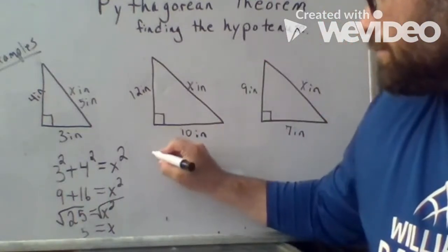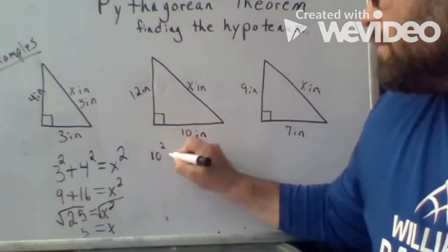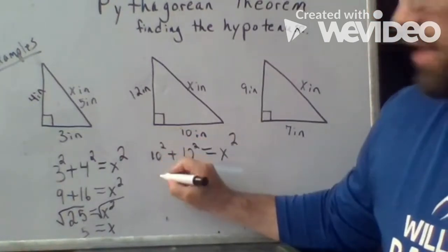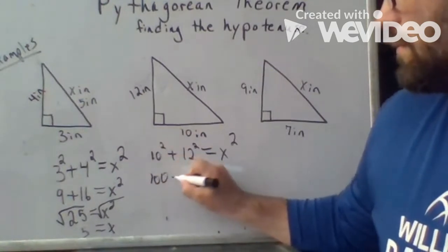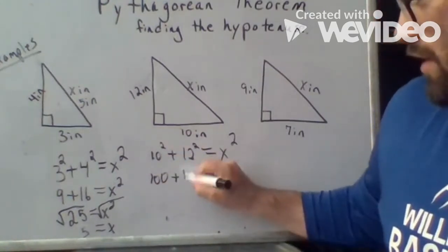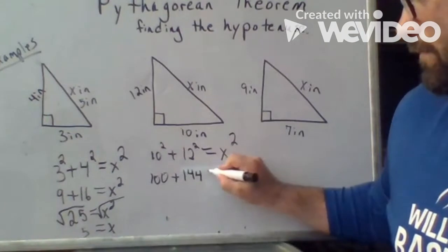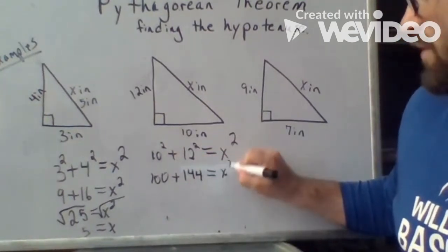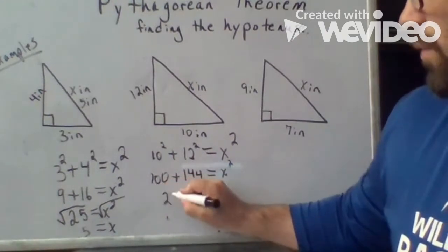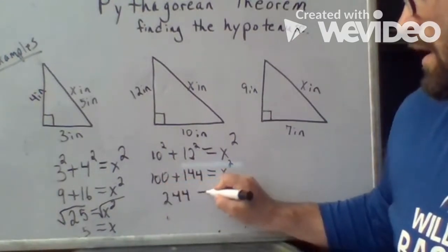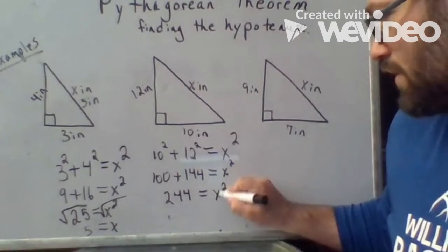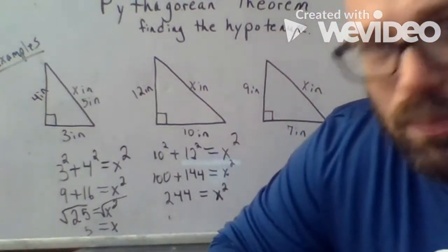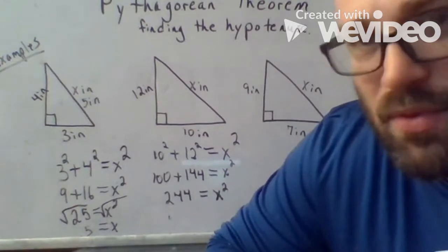So 10 squared plus 12 squared equals x squared. So 10 squared is 100. 12 squared is 144. Remember, that's just 12 times 12. That's 10 times 10 equals x squared. So I can put those together. I get 244 equals x squared. Now, if you know your perfect squares, we did these earlier in the year, you might be able to figure out approximately what it is. What numbers it's in between.